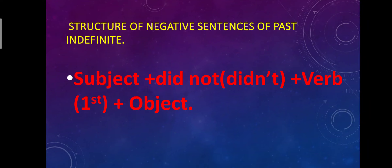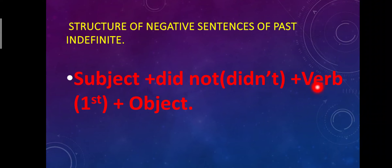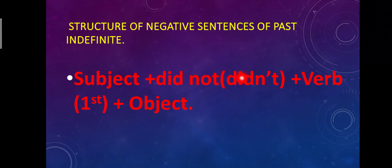Now the structure of negative sentences of Past Indefinite Tense: Subject + did not (or didn't) + First Form of Verb + Object. An important point to note is that after the subject, we use 'did not' or its contraction 'didn't.' Then the verb must change from its second form (used in affirmative sentences) back to its first form. A common student mistake is using 'didn't' but keeping the second form of the verb — that is incorrect. Always use the first form of the verb after 'did not' or 'didn't.'